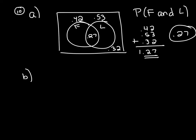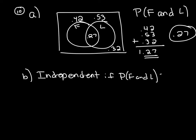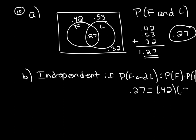Part B asks: are the events fluorescent and long life independent? Events are independent if the probability of F and L equals the product of the probability of F and the probability of L. We just found P(F and L) = 0.27. The probability of F is 0.42 and the probability of L is 0.53. If you multiply 0.42 and 0.53 you get 0.2226. Since 0.27 does not equal 0.2226, these are not equal, so the events are not independent.